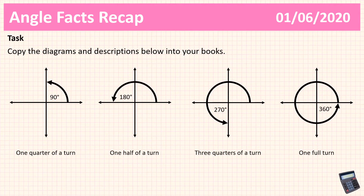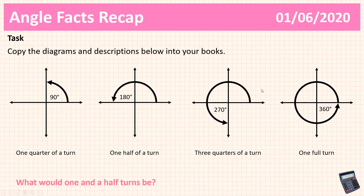So before we do anything, here are some diagrams. I've got a quarter turn, a half turn, three quarters of a turn, and a full turn. Your first task: pause the video and tell me what would one and a half turns be. How many degrees would one and a half turns be? Please pause the video and have a go at that question.